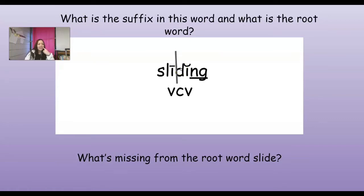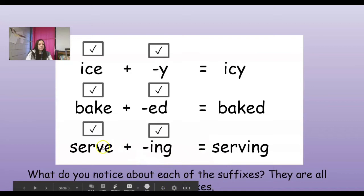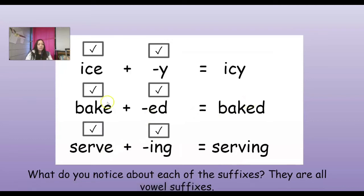Think of the word slide - S-L-I-D-E. If I look at these four letters, that would technically be 'slid.' So what's missing? I need that I to be long. What's missing? The sneaky E at the end. So this word is 'ice.' If I want to add the Y at the end, I say 'icy' - what's missing? The E, the sneaky E has been dropped. Look here - bake, and then I want to add the suffix ED. So 'baked' - what's missing? If I put these two together, I would have two E's. I only have one E. How about 'serving'? The E is missing. So all of these root words drop the E, and all of these suffixes are called vowel suffixes because they begin with a vowel.